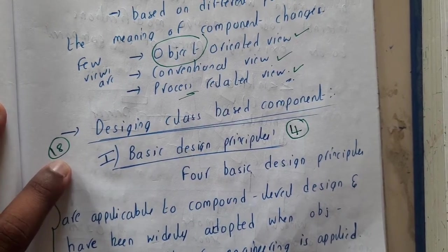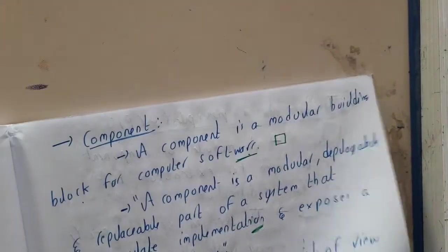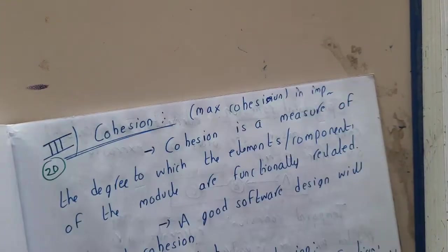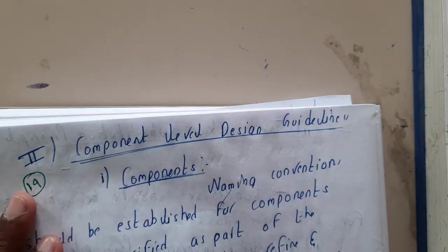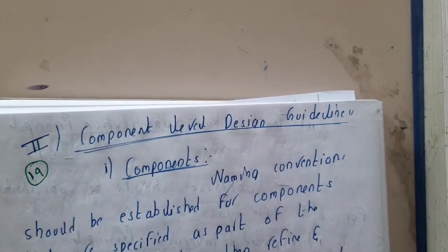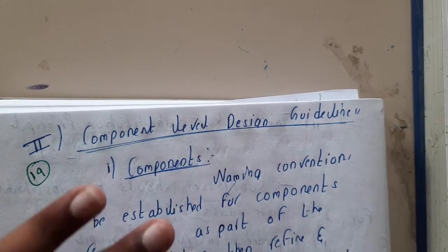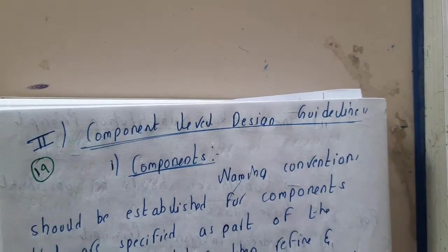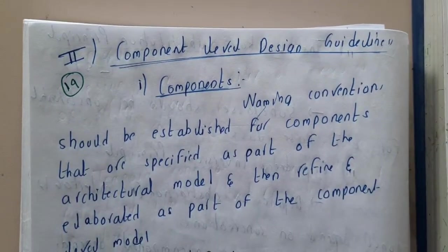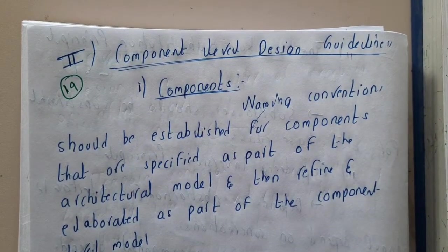These are the four basic principles for designing a class-based component. In the next lecture, we will go through the second step — component level design guidelines — where we have three different guidelines to discuss. Thank you for watching.